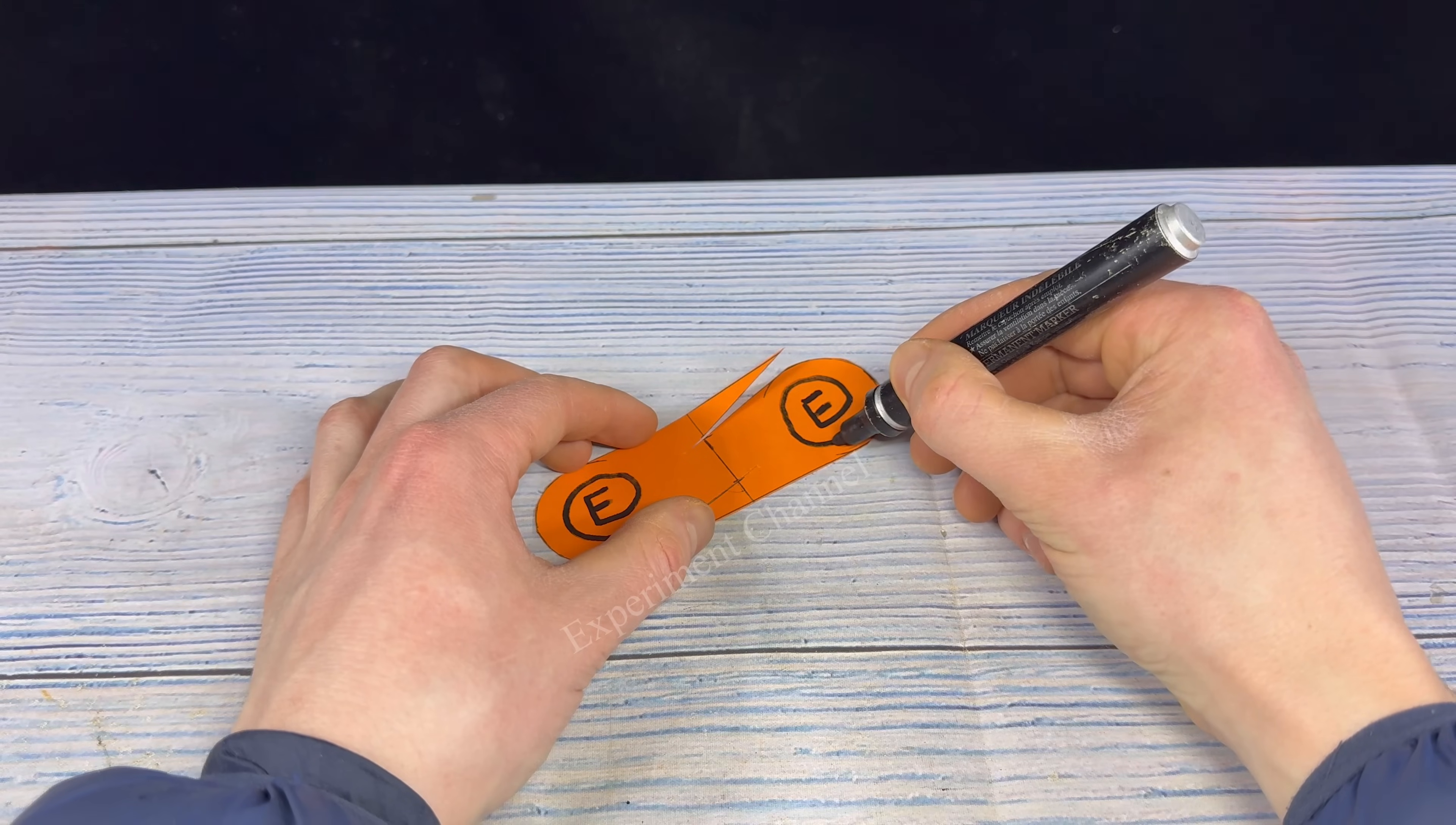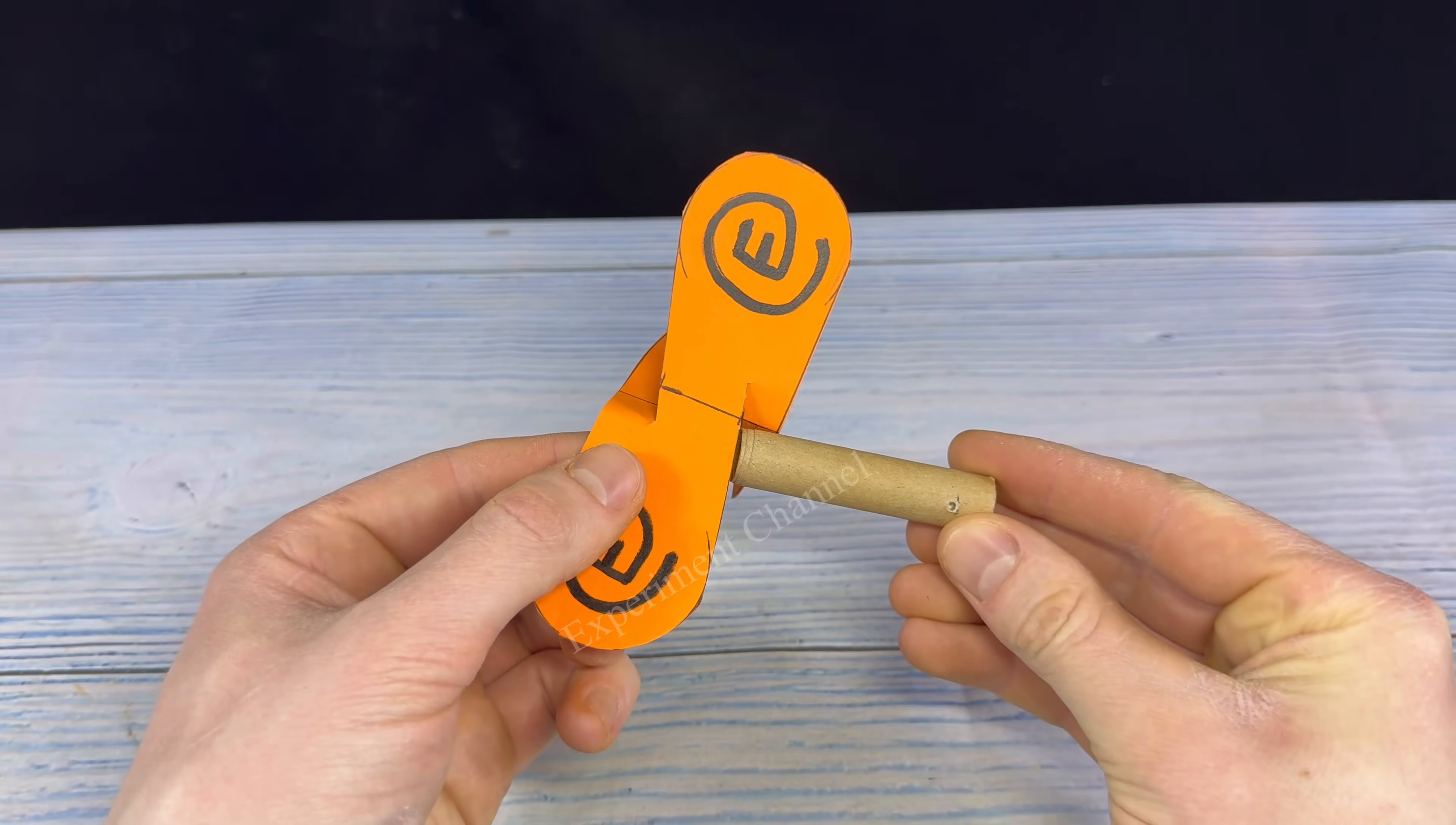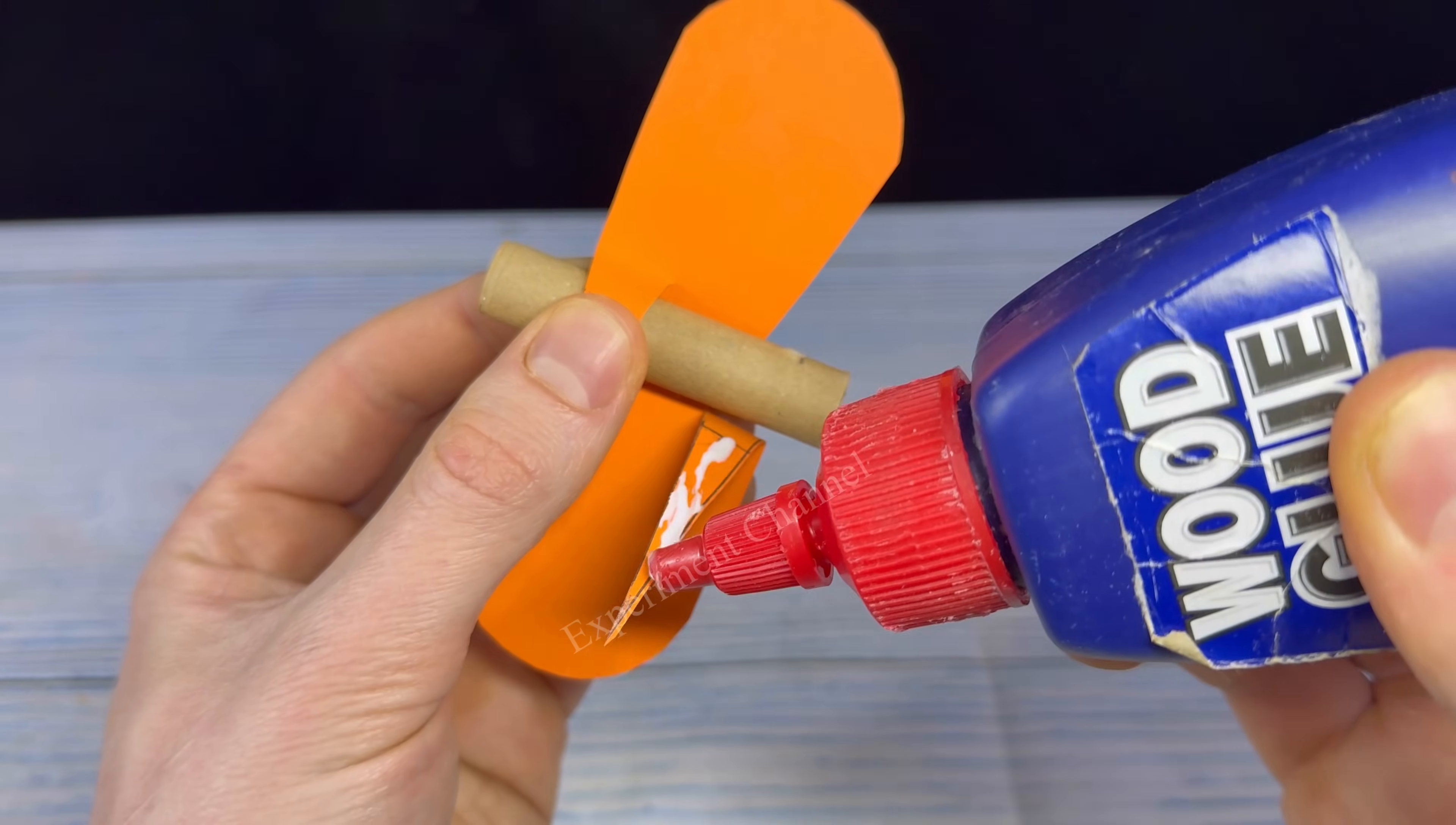Of course we can't forget the channel logo. Now we're going to take our motor, place it in the middle, and along with some super glue, we're going to glue this bad boy together.